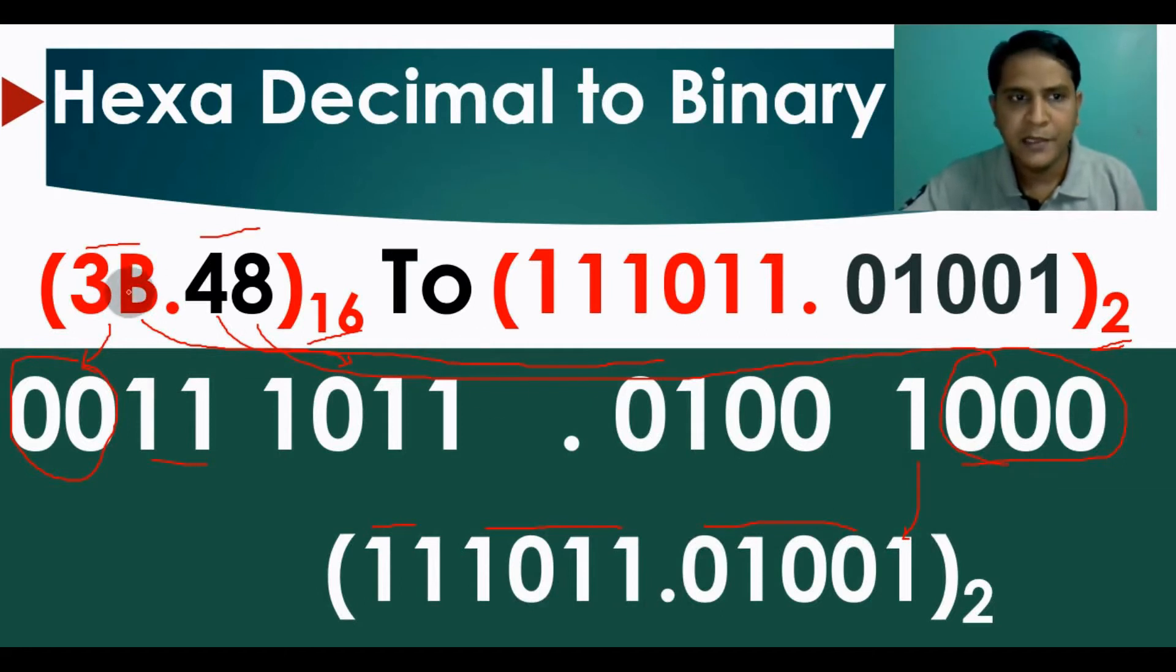...of this hexadecimal 3B.48 in base 16 is 111011.01001 in base 2. I hope you understand how to convert a hexadecimal number into a binary number. If you have any questions, feel free to ask in the comment section. Thanks for watching!